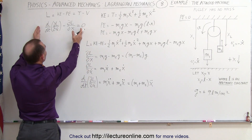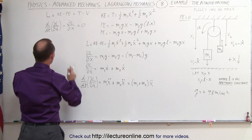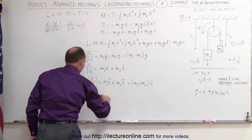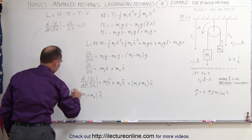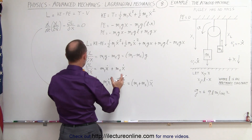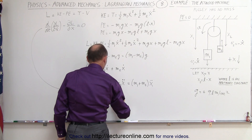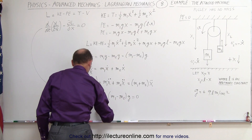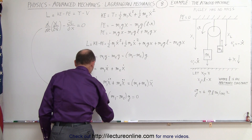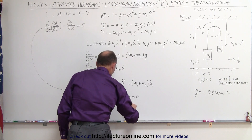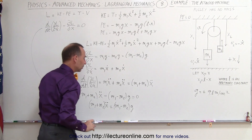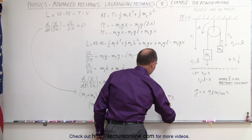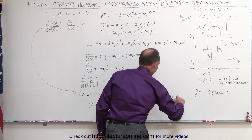Now we're ready to plug into the Euler-Lagrange equation to find the equation of motion. We take (m1 plus m2) times x-double-dot minus (m1 minus m2) times g equals zero. Moving the second term to the other side, we get (m1 plus m2) times x-double-dot equals (m1 minus m2) times g. Dividing both sides, x-double-dot equals (m1 minus m2) divided by (m1 plus m2) times g, which is the acceleration due to gravity.